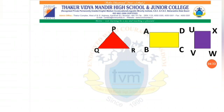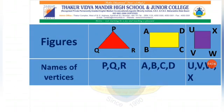We have the same figures, but in this table we are going to write the names of the vertices. For triangle PQR, the names are P, Q, R. Note that a comma is compulsory between the two letters when we write the names of the vertices. For rectangle ABCD: A, B, C, D. For the square: U, V, W, X.